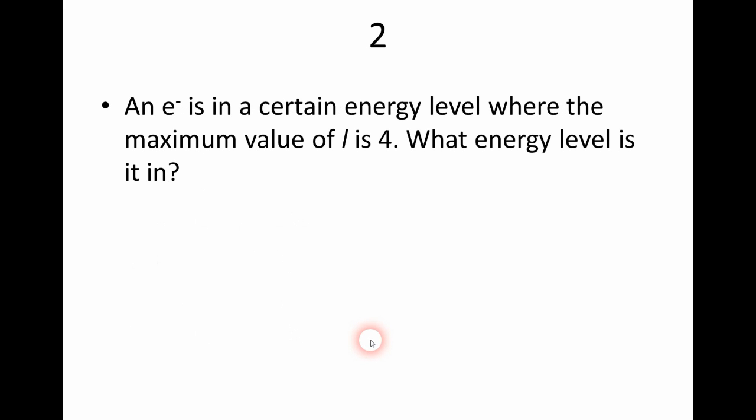Number two asks: an electron is in a certain energy level where the maximum value of L is four — what energy level is it in? Since the maximum L value is N minus one, then N equals the maximum L value plus one, so N equals five. The electron is in the fifth energy level.